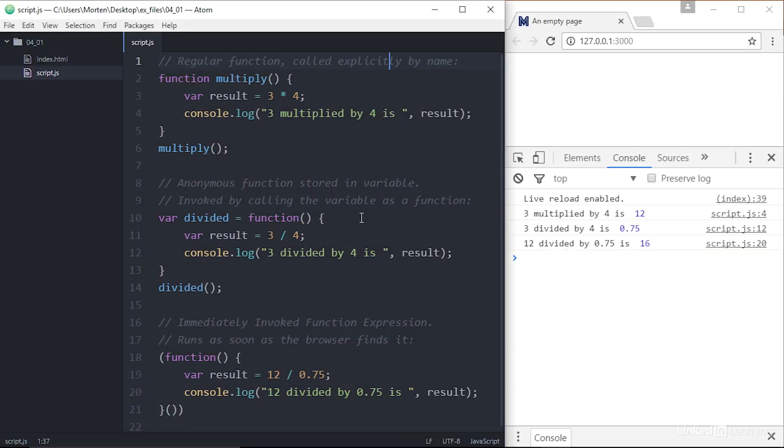Anonymous functions don't have a name, so the parentheses appears right after function. Immediately invoked function expressions are anonymous functions with another parentheses pair at the end to trigger them, all wrapped inside parentheses.